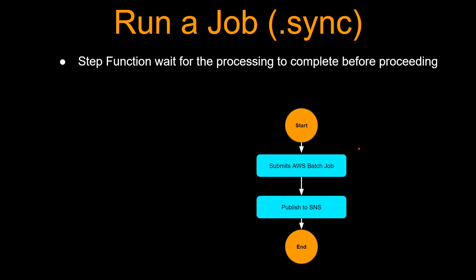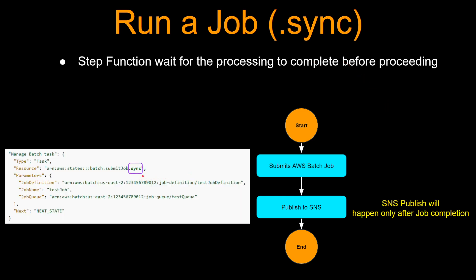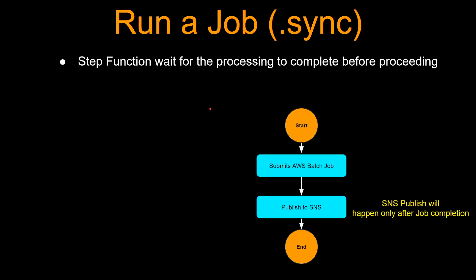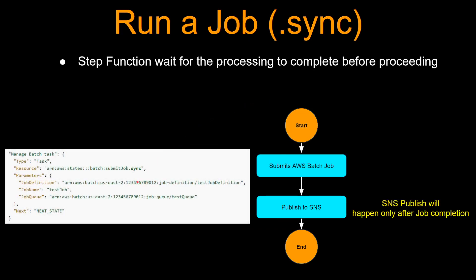Now let's take a look at the next pattern, which is run a job, or .sync. In this pattern, step functions will wait for the processing to complete before proceeding. So the publish-to-SNS step will only happen after the AWS Batch job is finished processing. Why is it called .sync? Because you just put .sync at the end of the resource, and it is going to execute in that fashion. If you don't add .sync, it runs as request-response; if you add .sync, it runs in this run-a-job fashion.